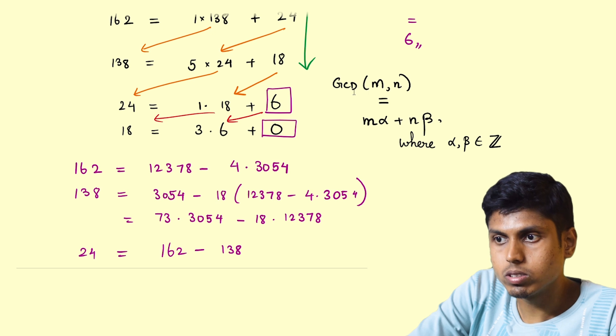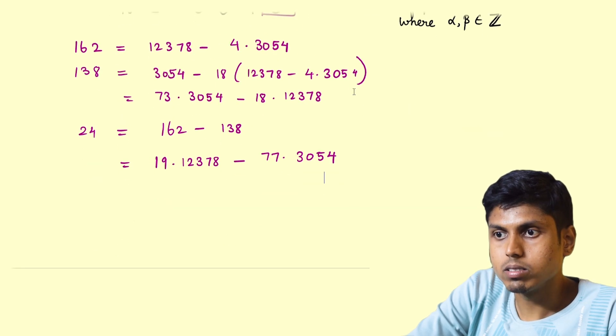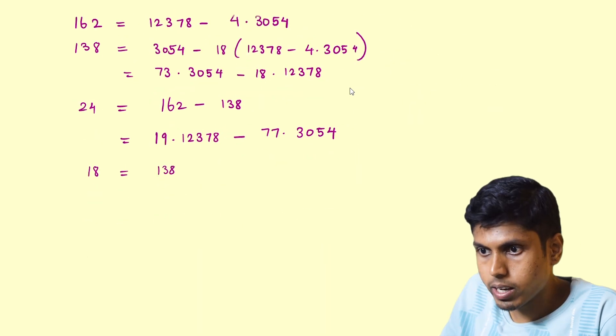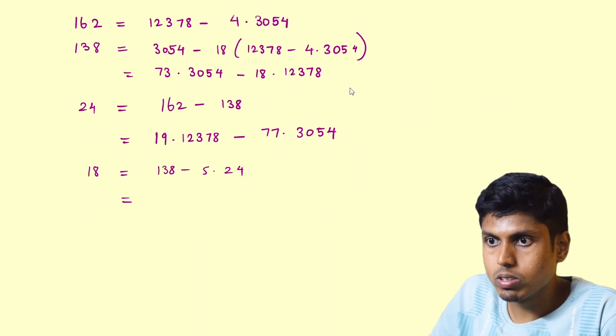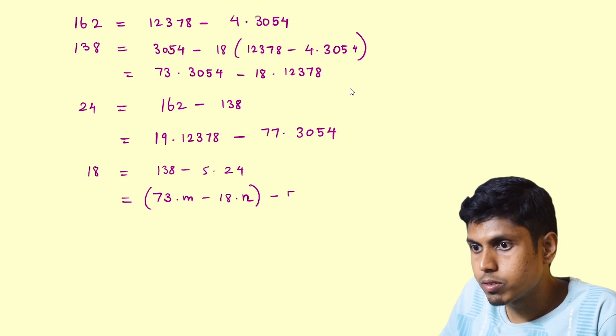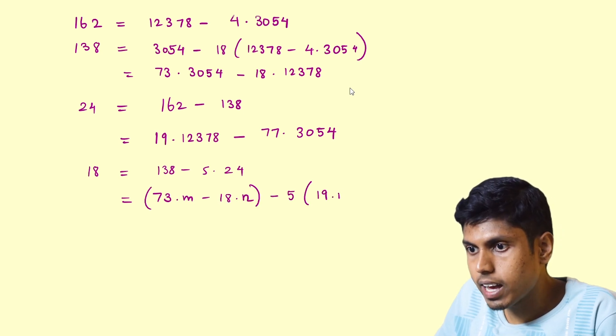So now we have found 24, and 18 is actually 138 minus 5 times 24. So this would be 73m minus 18n minus 5 times 19m minus 77n.